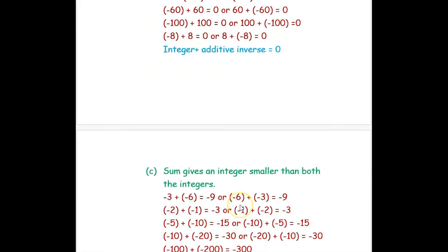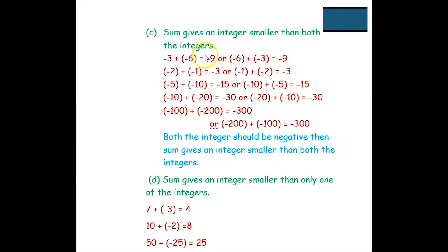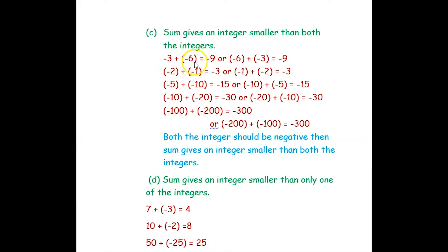Next, we want to find two integers such that their sum gives an integer smaller than both the integers. So if you add two integers, the result should be smaller than both of them. So negative 3 plus negative 6 equals negative 9, or negative 6 plus negative 3 equals negative 9.